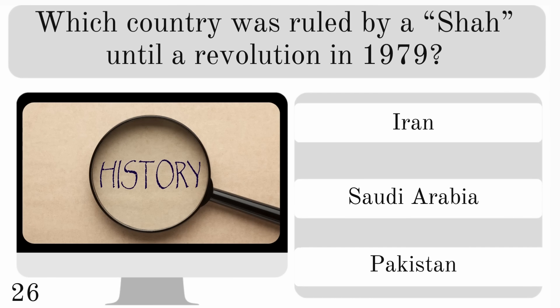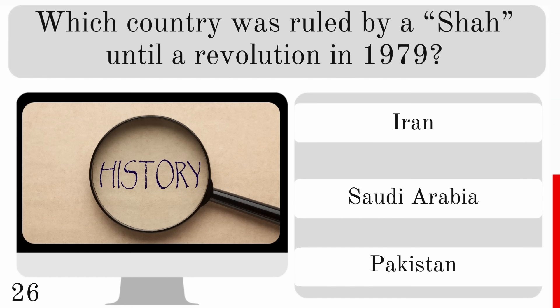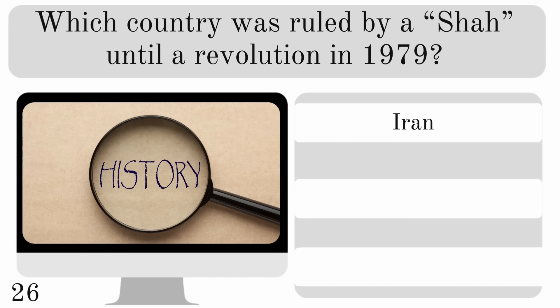Which country was ruled by a Shah until a revolution in 1979? Is that Iran, Saudi Arabia or Pakistan? And the answer — Iran.